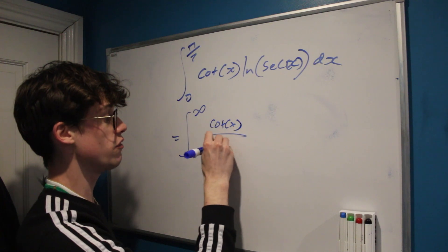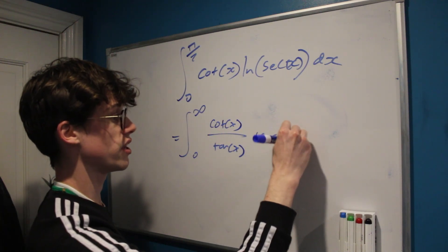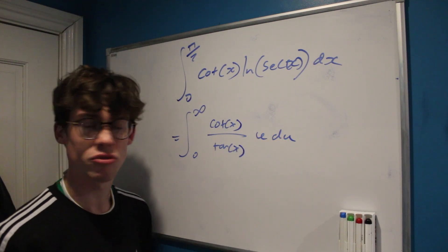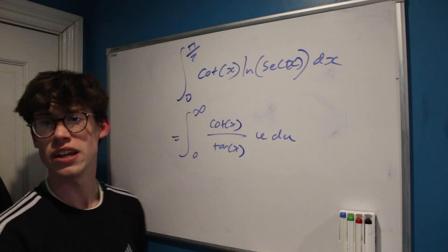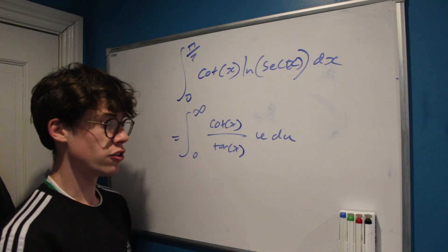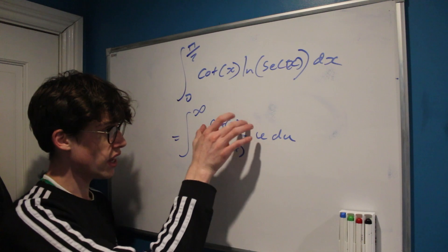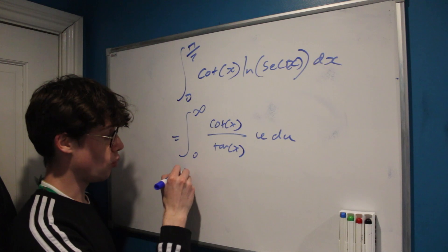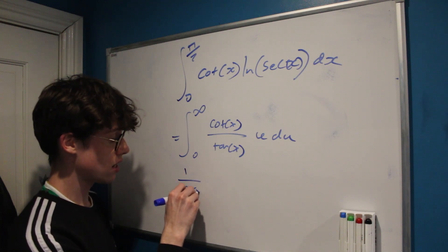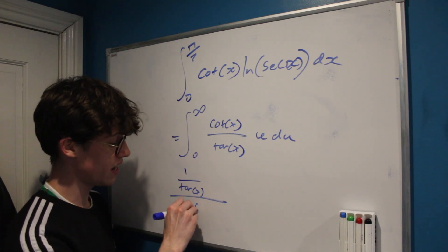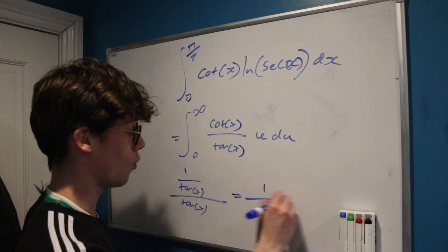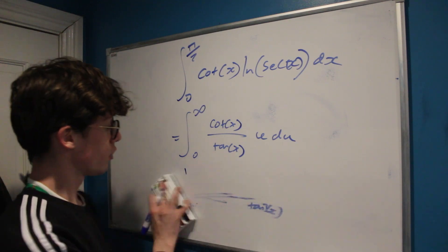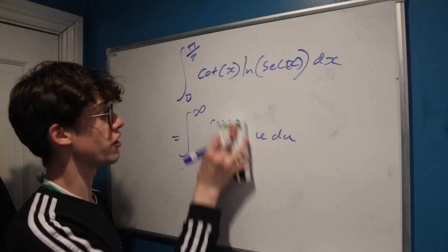We can now rewrite our integral as the integral from 0 to infinity of cot(x)/tan(x) times u du. But we're integrating with respect to u, so we don't want anything in terms of x. The key observation is that cot(x) is 1/tan(x), so cot(x)/tan(x) equals 1/tan²(x).